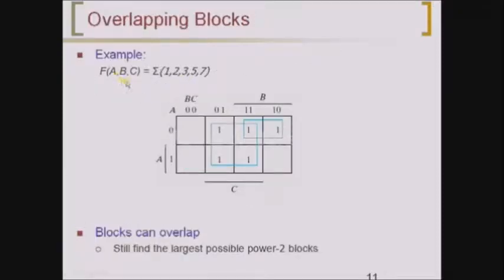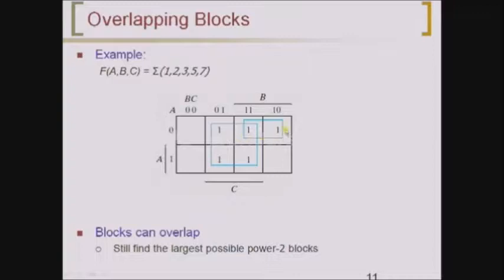Next consider overlapping blocks for f(a, b, c). Plot all minterms on the map, then form the maximum-size groups. Here we see one block grouping four cells and one more block grouping two cells. Blocks can overlap — if we tried to isolate a single minterm it would give more literals, so instead we group it with a minterm already in another block. To convert blocks into an algebraic expression, write down only the variables that do not change. For the four-cell block, a and b both change so they are ignored, and c is constant at 1, giving term c. For the two-cell block, a is constant at 0 (written a-bar), b is constant at 1 (written b), and c varies, so it is ignored. The result is c + a-bar·b.